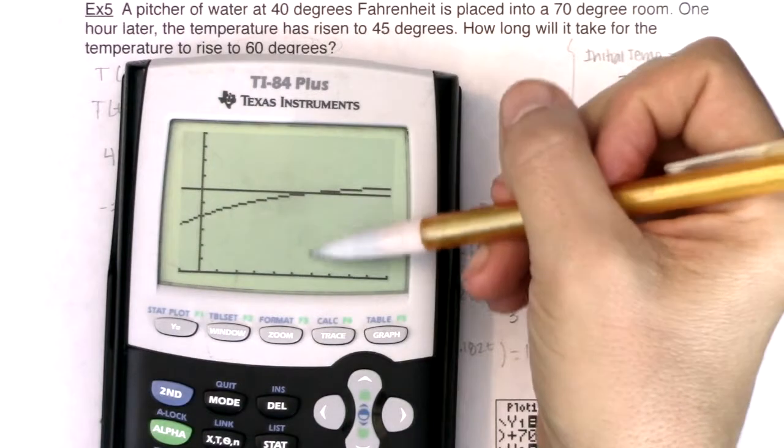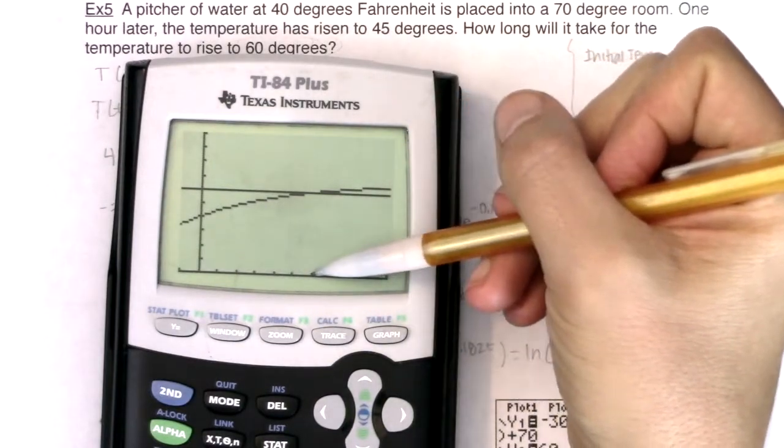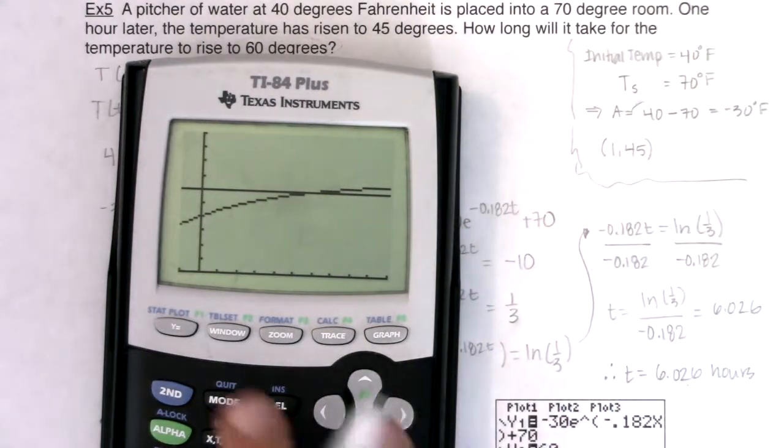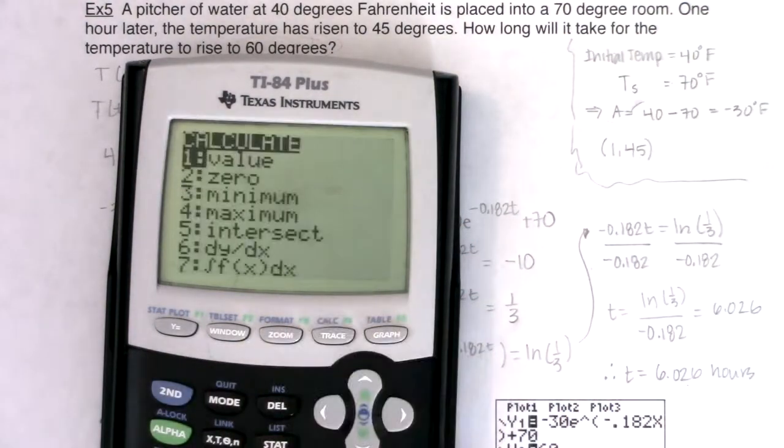That intersection, if I count it, one, two, three, four, five, six, it looks pretty close to six, just visually. And that's good because my answer was pretty close to six, but I'm going to hit second trace five.